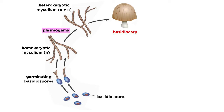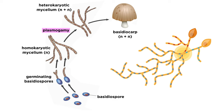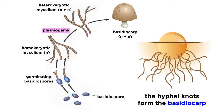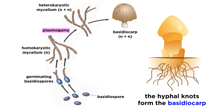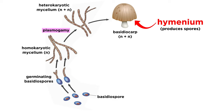Depending on the environmental conditions, the mycelium is now ready to produce a basidiocarp. Generally, the mycelium consists of long and loose hyphal branches. However, whenever the fungus needs to create a fruiting body, these branches shorten and become more concentrated, forming hyphal knots. These knots make up the condensed structure that allows for basidiocarp formation. So any basidiocarp, or mushroom, is made of dense networks of hyphae with some structural differences between species.